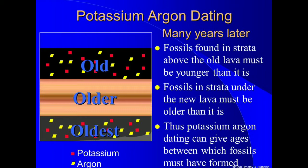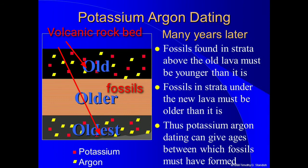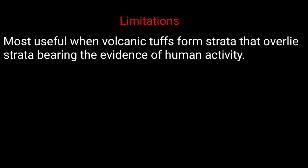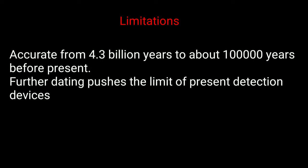There are some limitations of this technique. The technique works well for almost any igneous or volcanic rock, provided that the rock gives no evidence of having gone through a heating recrystallization process after its initial formation. This technique is most useful to archaeologists and paleontologists when lava flows or volcanic tuffs form strata that overlies strata bearing the evidence of human activity. Materials dated using this method are not the direct result of human activity. It is crucial that the associations between the igneous or volcanic beds being dated and the strata containing human evidence is very carefully established. Potassium-argon dating is accurate from 4.3 billion years to about 1 lakh years before present. At 1 lakh years, only 0.0053 percent of the potassium-40 in a rock would have decayed to argon-40, pushing the limits of present detection devices.